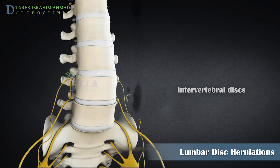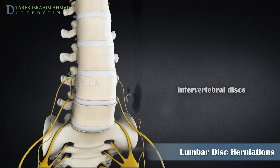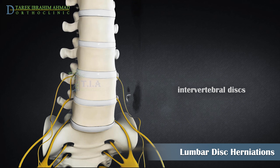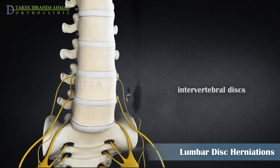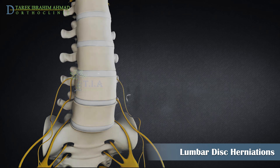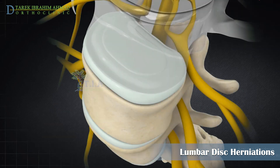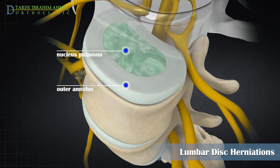The spaces between the vertebrae are maintained by round pads of cartilage called intervertebral discs. They allow for flexibility in the lower back and act as shock absorbers throughout the spinal column as the body moves. They are made up of two components: the annulus fibrosis, the tough flexible outer ring of the disc, and the nucleus pulposus, the soft jelly-like center of the disc.